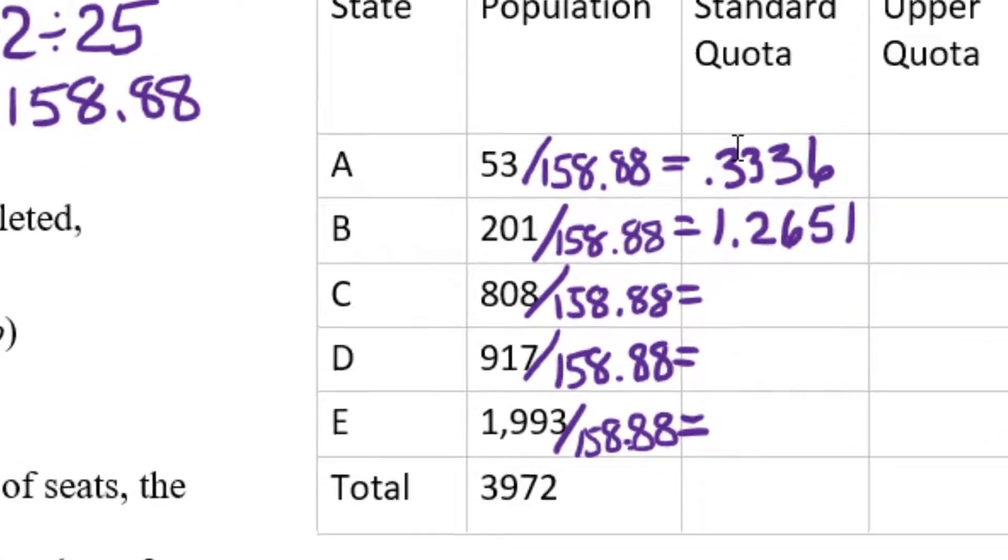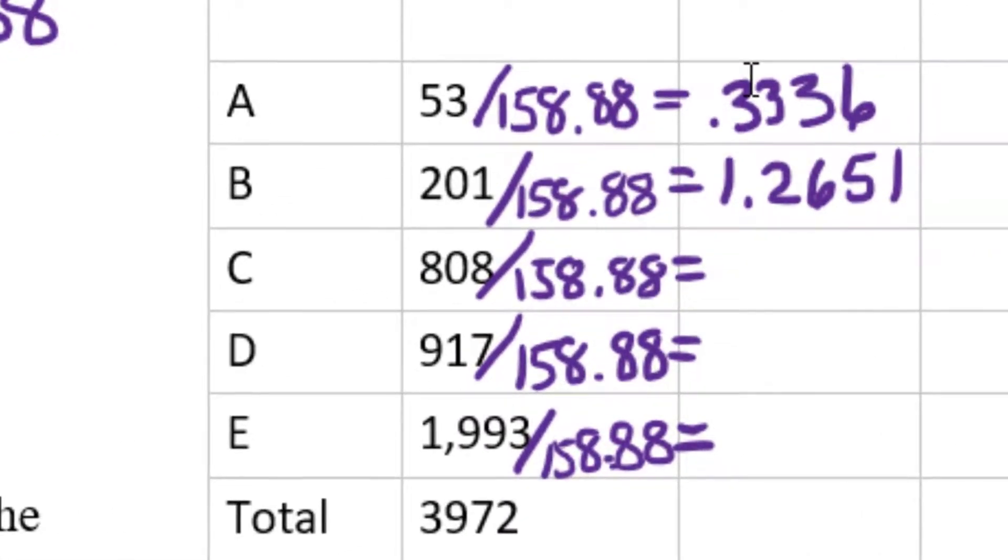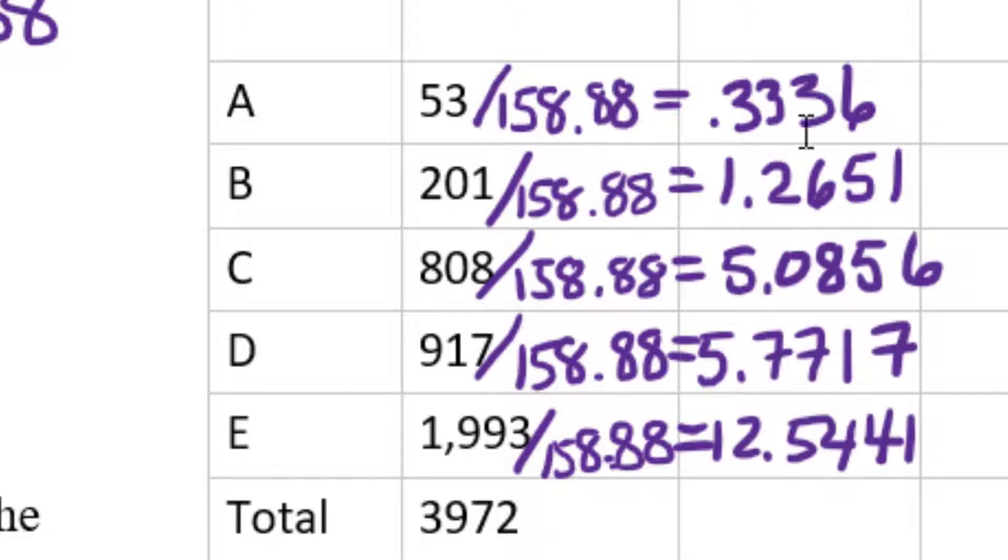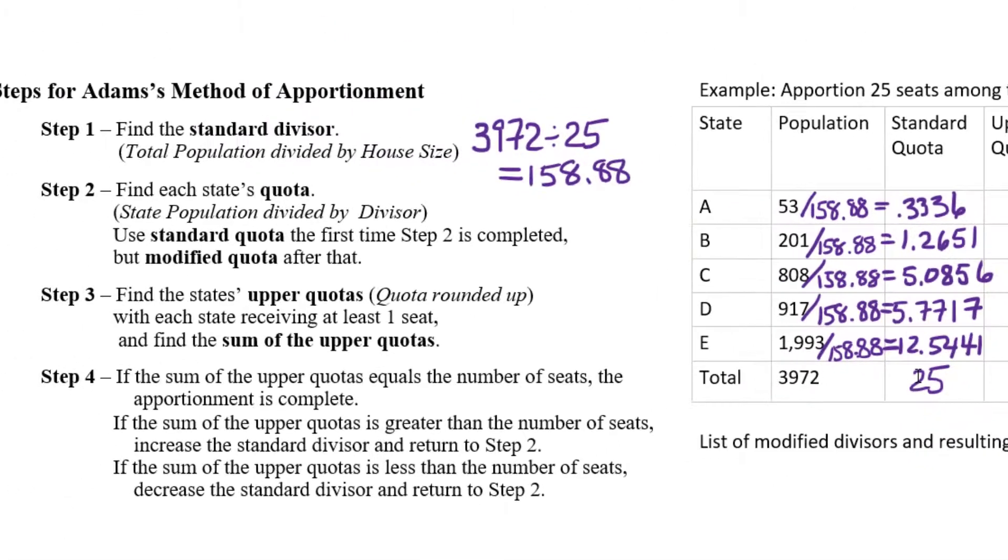So what this means is that state A, in a fair situation, would get a third of a representative approximately. State B would get about one and a quarter representative. I'm going to go ahead and finish the list, finishing off step two. And you'll notice that if you add up all the standard quotas, you get approximately 25, which is what you should get, because we're dividing up those 25 seats among the states. The only problem is, we can't actually give a state a third of a representative. And that's where these apportionment methods come in.